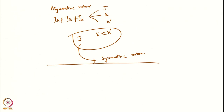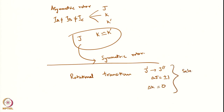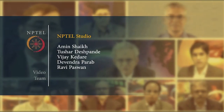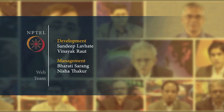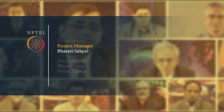One thing to remember is that rotational transitions are generally defined by J to J' (or J' to J'') with the selection rules delta J = ±1 and delta K = 0. This is the selection rule for polyatomic molecules. We will stop here and continue in the next lecture. Thank you.